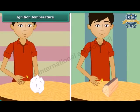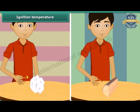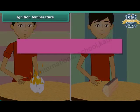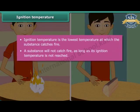A paper burns when lighted with a matchstick. Now bring the matchstick close to a piece of wood — the piece of wood does not catch fire. One lighted matchstick is not able to burn the piece of wood, but a piece of paper burned quickly. This is because the piece of wood has not reached its ignition temperature. Ignition temperature is the lowest temperature at which a substance catches fire.